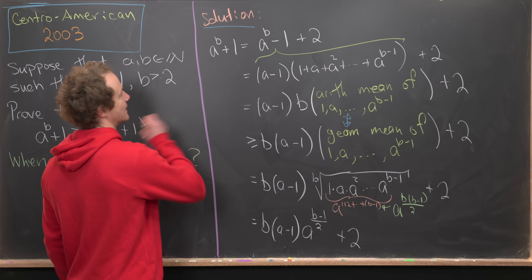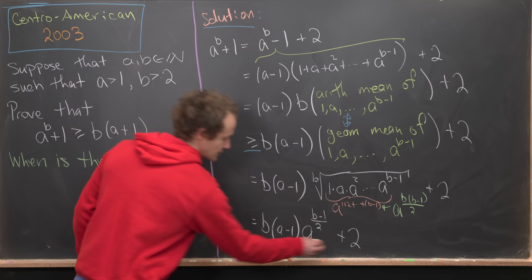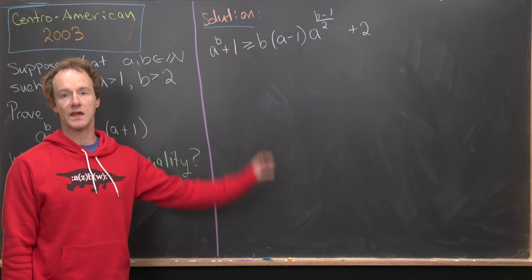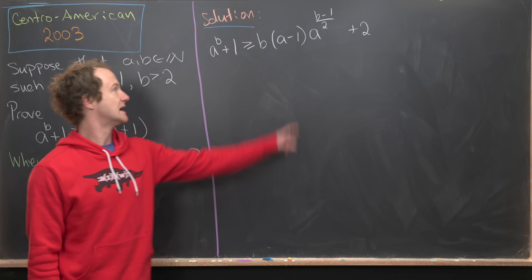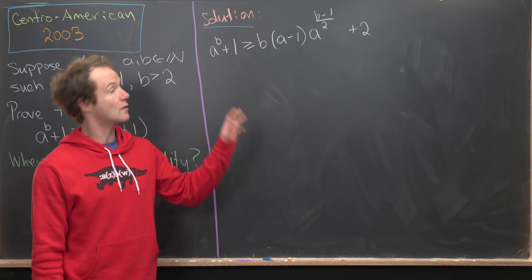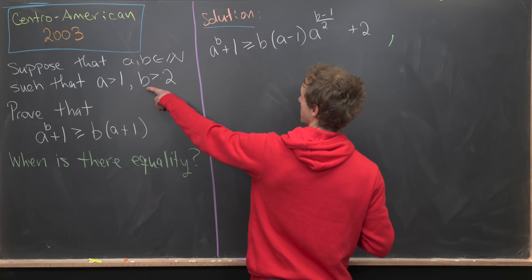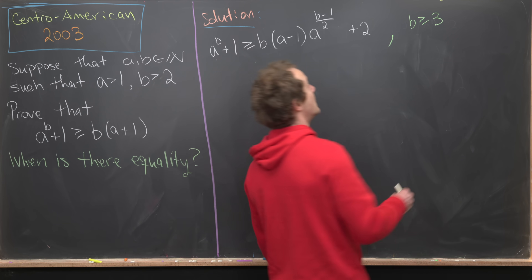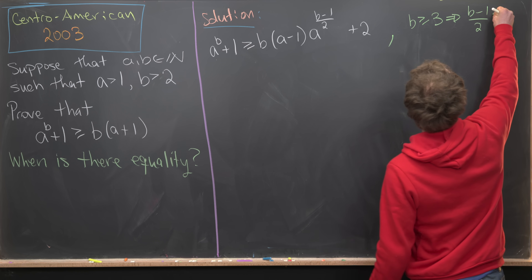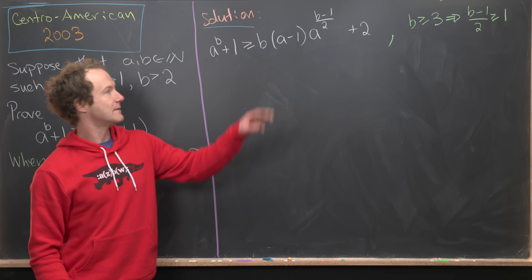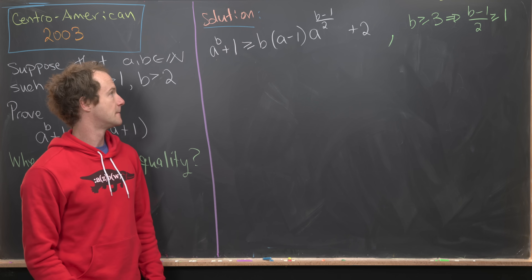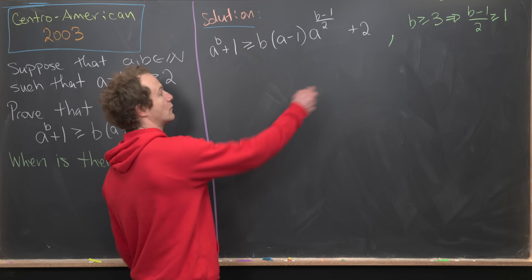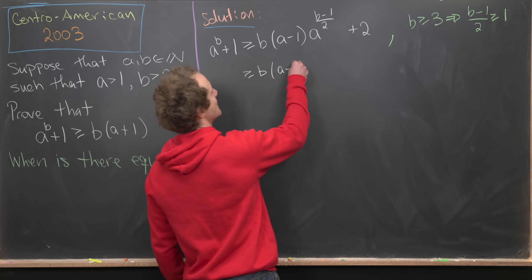On the last board we constructed the inequality: A to the B plus one is bigger than or equal to B times A minus one times A to the B minus one over two, plus two. From our assumption, B is bigger than or equal to three, which tells us that B minus one over two is bigger than or equal to one. So we can replace that exponent with one, giving us B times A minus one times A, plus two.